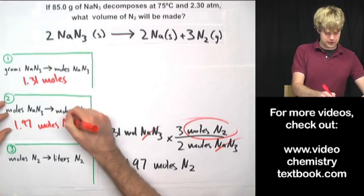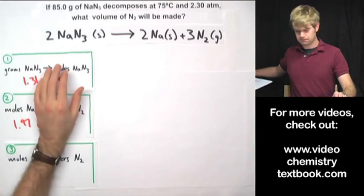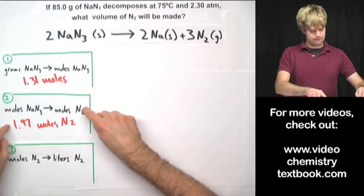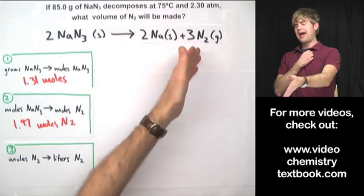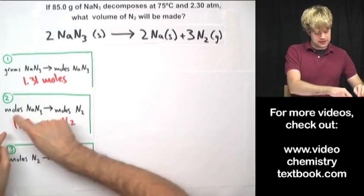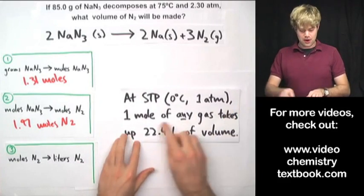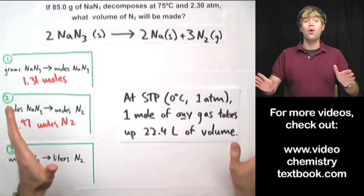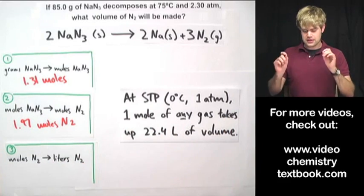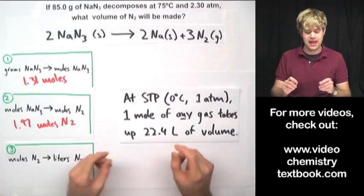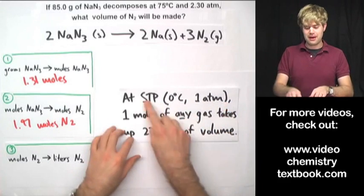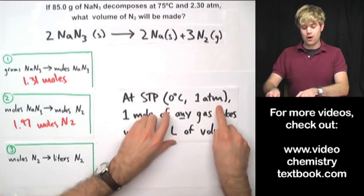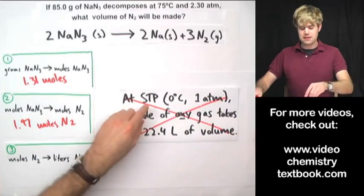1.97 moles of N2 — I'm two-thirds of the way there. The last thing I need to do, since the question asks for the volume of N2 not the number of moles, is convert moles of N2 to liters. You might think it's easy — just multiply by 22.4 liters per mole — but no! That only works at STP, which is 0 degrees Celsius and 1 atm. I'm at 75 degrees Celsius and 2.3 atm, so I cannot use that rule.